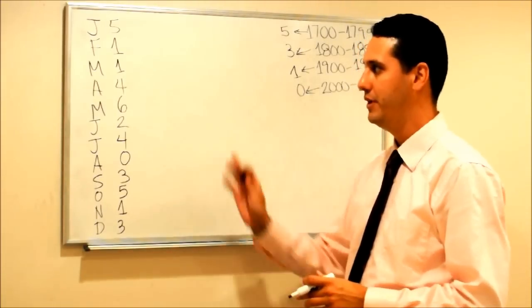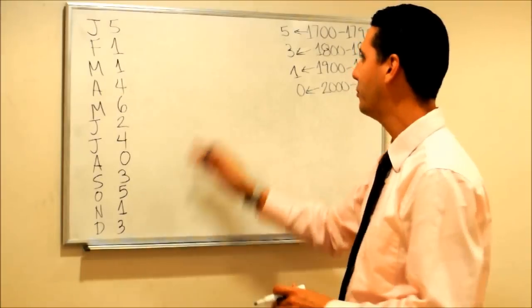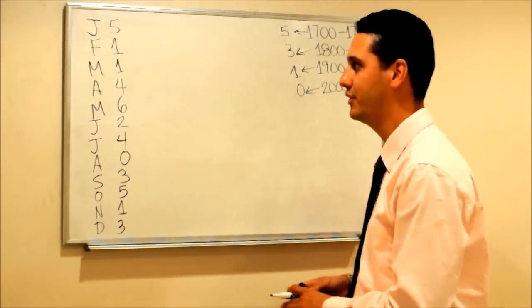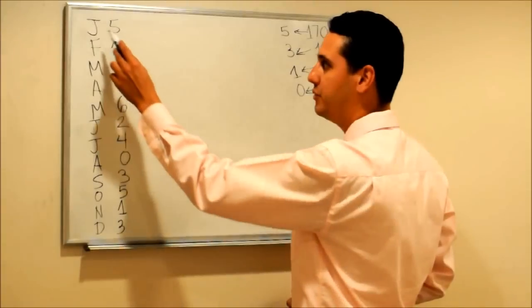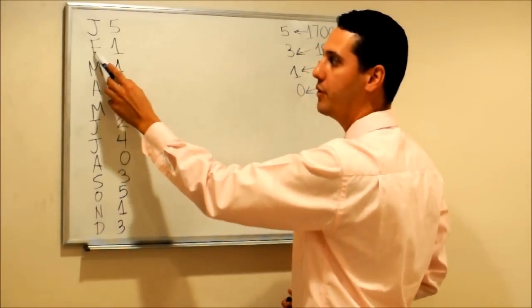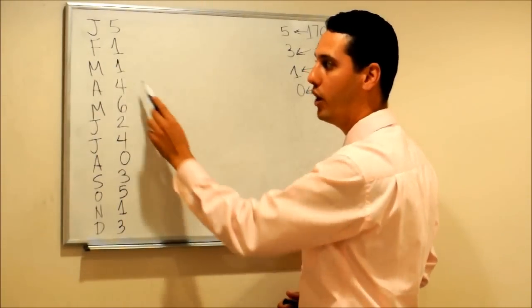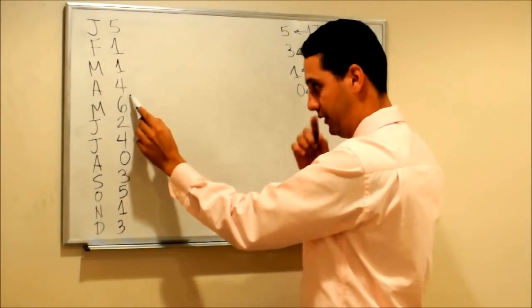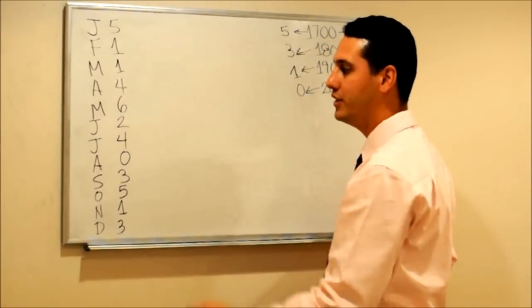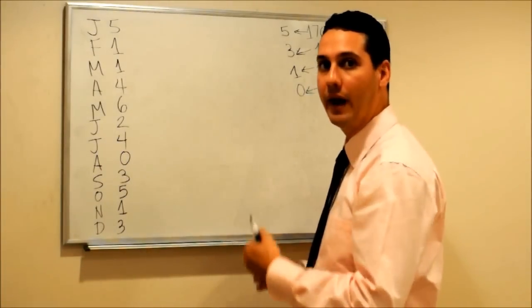Maybe now you're wondering why all these numbers are here. Let me explain what these numbers mean. For example, January is 5, February is 1, March is 1, April is 4, and so on. These are numbers that we're going to use in our algorithm, so you need to memorize these numbers.